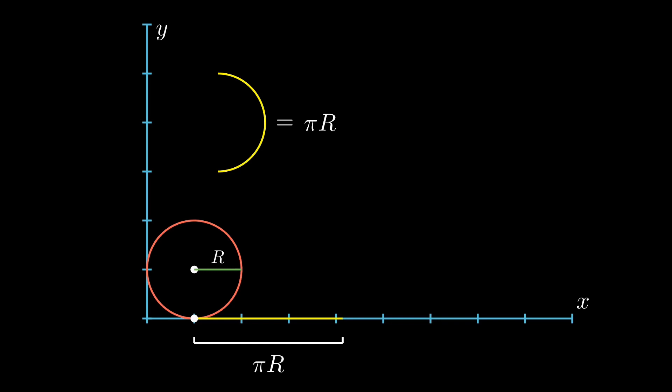Let the circle roll half a revolution. The question asks about the displacement between the initial point in contact with the ground and the final point.